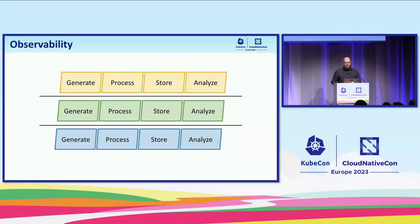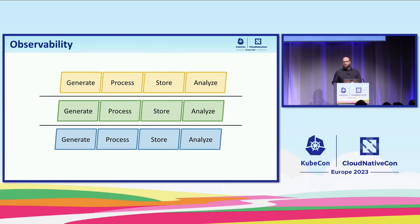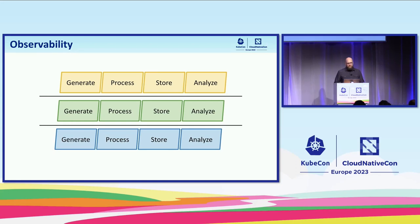Traditionally there are three types of telemetry data: metrics, traces, and logs. Until recently, observability tools were designed as end-to-end solutions with one data type in mind. So to achieve a high degree of observability you would have to deploy several independent tool chains. And it also meant that if you wanted to make a change to any one component of that tool chain, you might have to replace the entire tool chain.